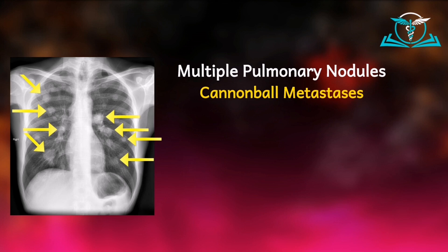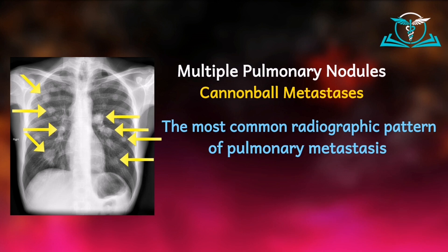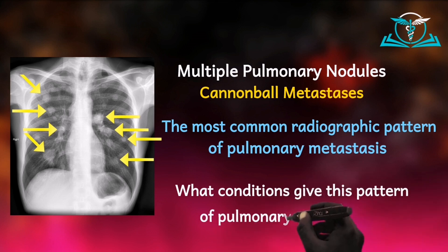On this pattern, all these nodules are very common in the bases of the lungs as indicated by the black circles, principally because the base of the lungs is highly vascularized compared to the apex. The cannonball appearance or cannonball metastasis is the most common radiographic pattern of pulmonary metastasis — meaning the spread of a cancer from a primary site into the lungs. What conditions can give rise to this pattern?